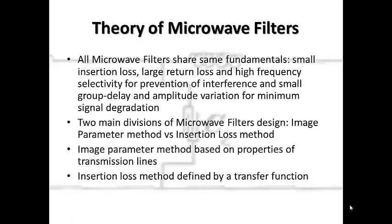Though there are various types of microwave filters, they all share the same fundamental basics. Electrical performance of all microwave filters is defined in terms of insertion loss, return loss, frequency selectivity, and so forth. All microwave filters are required to have small insertion loss, large return loss, and high frequency selectivity for prevention of interference. Also, small group delay and amplitude variation of the filter are required for minimum signal degradation. In physical aspect, microwave filters are required to have small volume and mass, and good temperature stability.